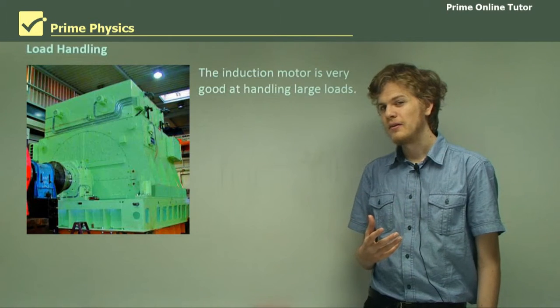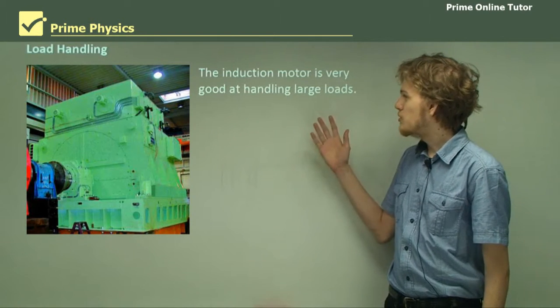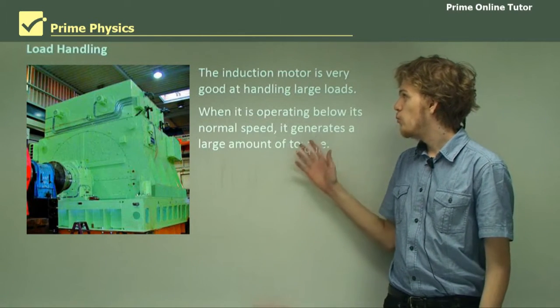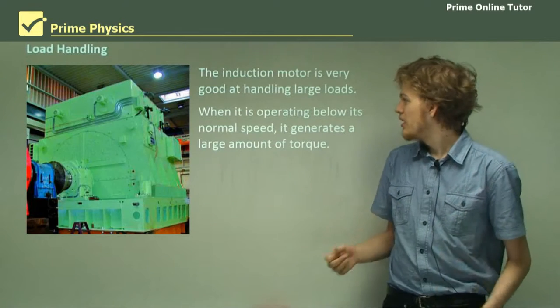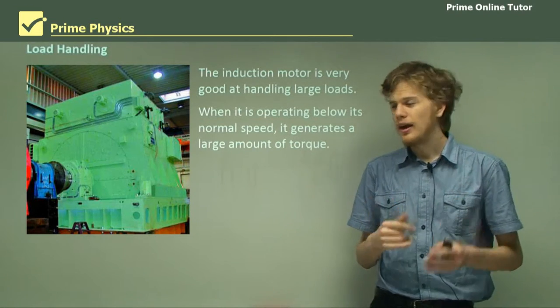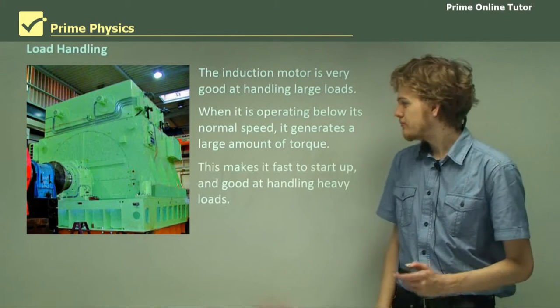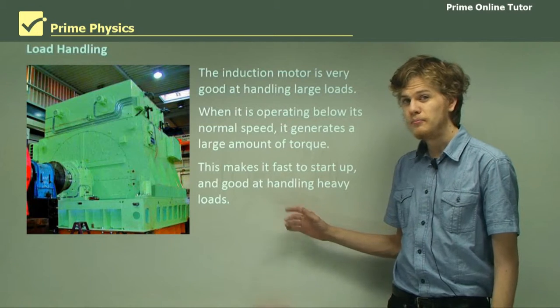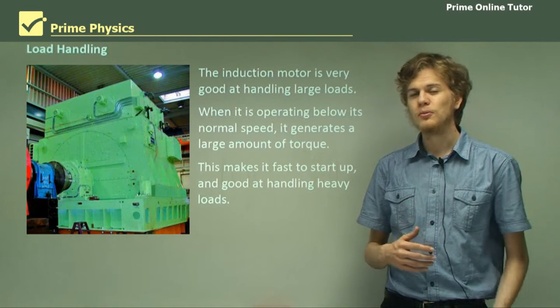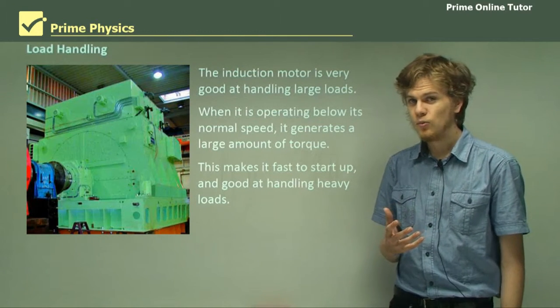What about load handling? How heavy a load can the various different motors handle? Well the induction motor is very good at handling loads especially compared to the AC brushed motor. Now when the induction motor is operating just below its normal speed it actually produces a greater torque than if it's closer to its maximum speed. So the heavier the load and the more the motor is slowed down the harder the motor will push the load. This makes it very fast to start up before you put a load on it and very good at handling heavy loads. Much better at handling heavy loads than for example standard AC motors or universal motors. Both of which will slow down significantly when faced with a heavy load.